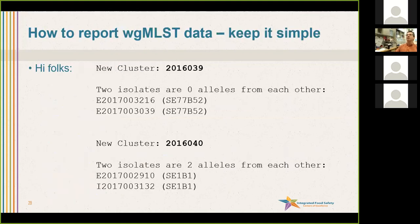And there we are back to where we were. We can go to the same thing. We can say, 'Hi folks, lab and epi, we got a new cluster — two isolates, there are zero alleles from each other,' and you get the isolate names and might even get the zip code. Or, 'Hey guys, we got a new cluster — two isolates or two alleles from each other,' you get the isolate names and the zip code. Basically the same thing as you would get with high-quality SNPs. Just now it says alleles from each other, not SNPs from each other. Very simple — provides guidance on what clusters you want to investigate.